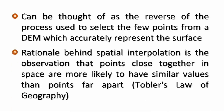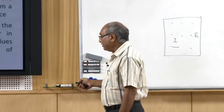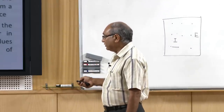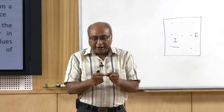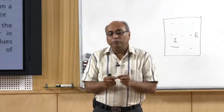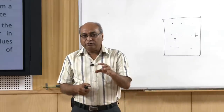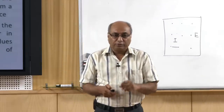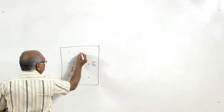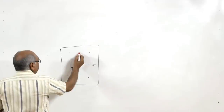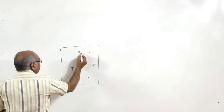The rationale behind interpolation is that where we do not have observations, we want to predict the value, and therefore we go for interpolation. This concept is based on Tobler's law of geography: the unknown point's value is most influenced by the closest observation. For example, the prediction for a location will have maximum influence from a nearby value rather than a distant one.